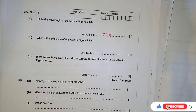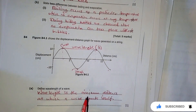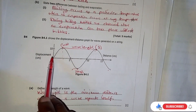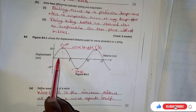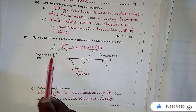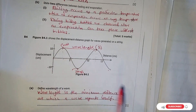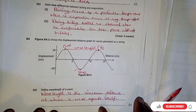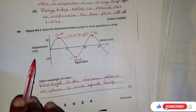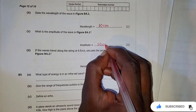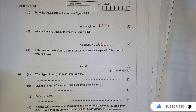What is the amplitude of the wave in figure 4.1? The amplitude is the displacement from the resting position — this line here. This value is 10, so the amplitude is 10 centimeters.